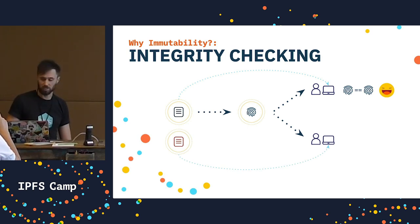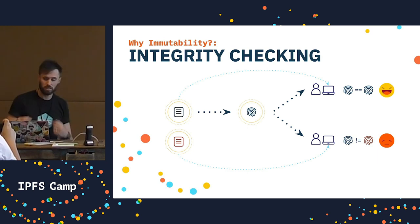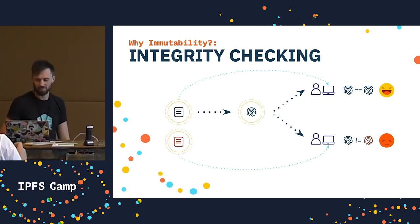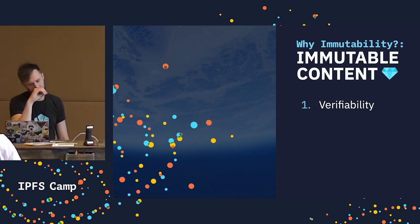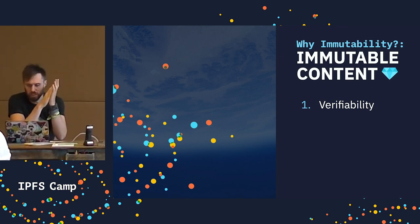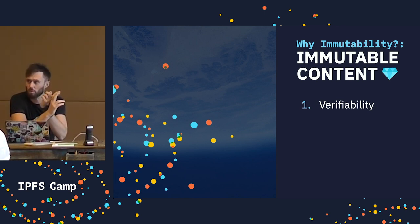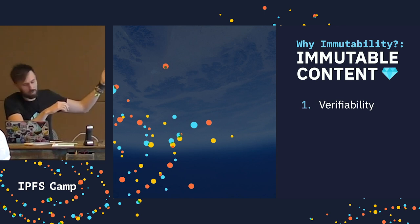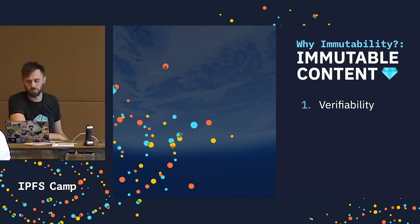If someone else gets hold of the data and the hashes don't match, then someone's tampered with your data. The guarantee of integrity checking is that content is immutable. If the data changes, the hash I generate no longer matches. So verifiability is one of the main reasons for using immutable data.